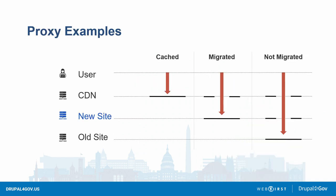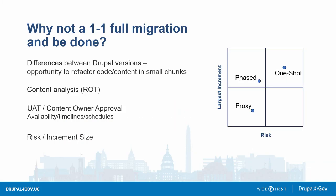To break that down: the user's browser sends the request to the CDN — if it's cached, it comes back. If not cached, it falls through to the new site and gets served from there if the content was migrated. If it was not migrated, we go back to the old site.